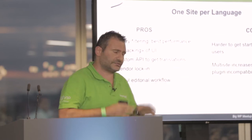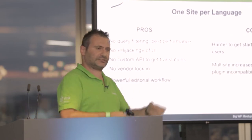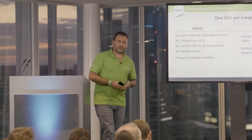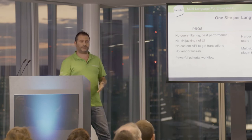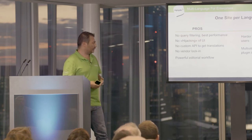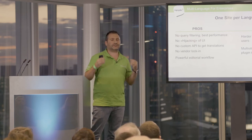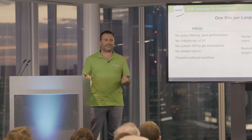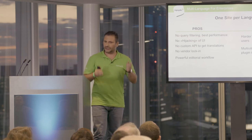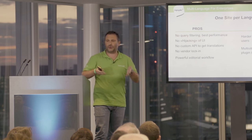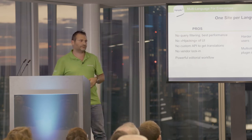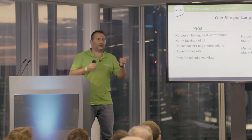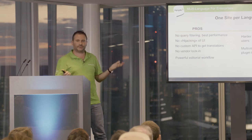There is no custom API needed. The English posts are in English, the Italian posts are in Italian — no custom API to extract translations. And finally, there is no vendor lock-in, which is a very important point for enterprises. When you use this plugin to translate posts and then uninstall it, nothing changes on the front end. The English website still shows English posts, the Italian website still shows Italian posts. On the front end, you just don't notice the plugin is missing.